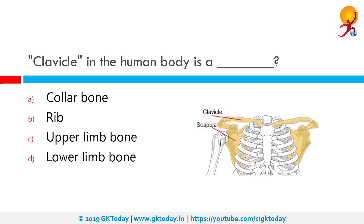The clavicle in the human body is the collarbone. It is a long bone that serves as a strut between the shoulder blade and the sternum or breastbone. There are two clavicles, one on the left and one on the right. The clavicle is the only long bone in the body that lies horizontally, the other notable long bone being the femur or thigh bone which is of course vertical.